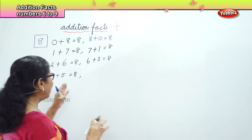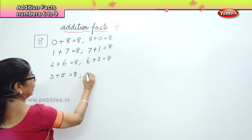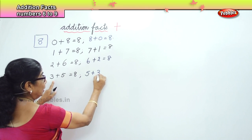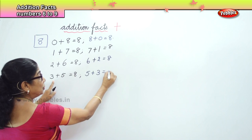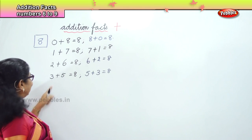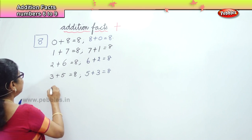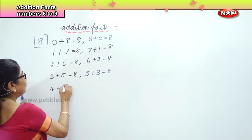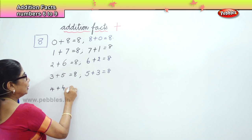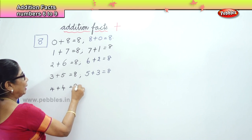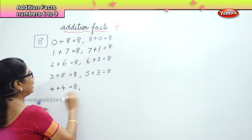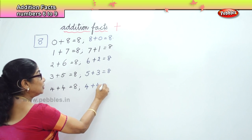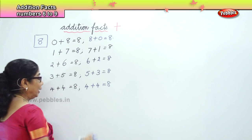And the reverse: 5 plus 3 is also equal to 8. Next comes 4. 4 plus 4 is equal to 8. And since both sides are the same, 4 plus 4 is also equal to 8.